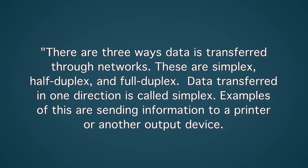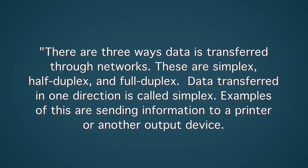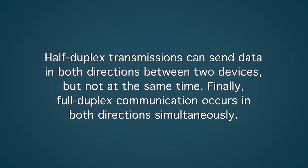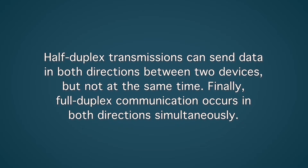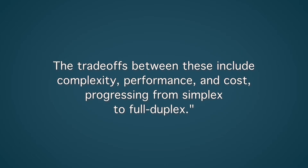Data transferred in one direction is called simplex. Examples of this are sending information to a printer or another output device. Half duplex transmissions can send data in both directions between two devices, but not at the same time. Finally, full duplex communication occurs in both directions simultaneously. The tradeoffs between these include complexity, performance, and cost, progressing from simplex to full duplex.